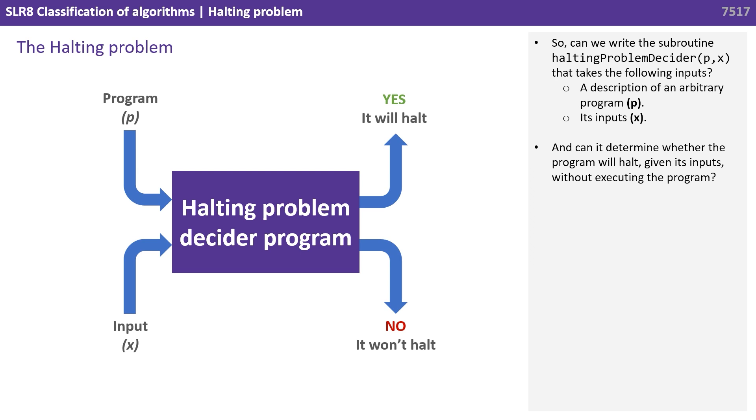Is it possible? Can we write a subroutine such as halting problem decider, which should accept as input a description of an arbitrary program, we'll call that P, and its inputs, we'll call that X, and determine, without executing the inputted program, whether it will halt given the inputs?